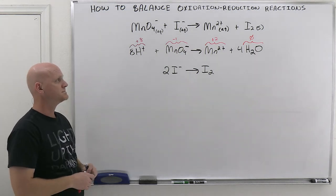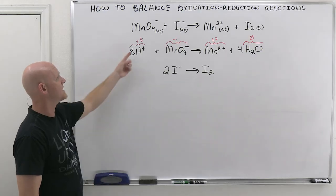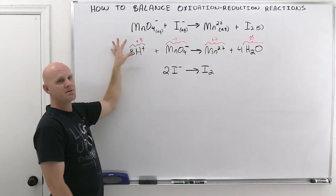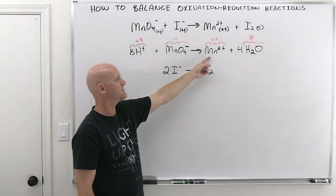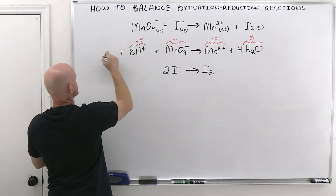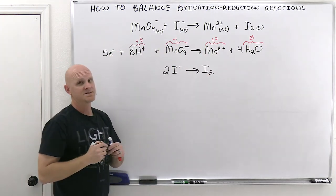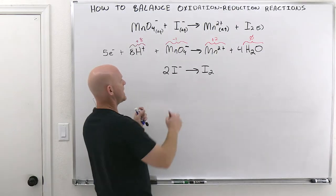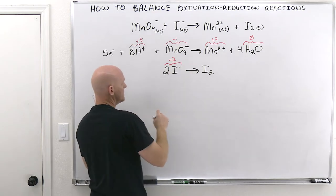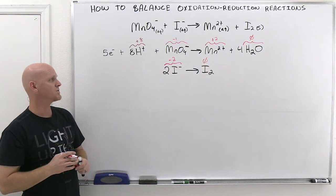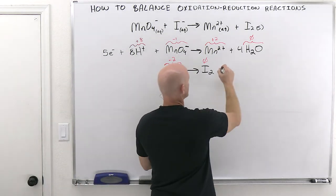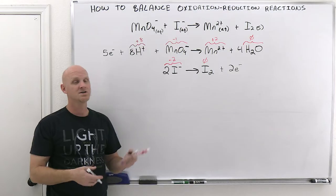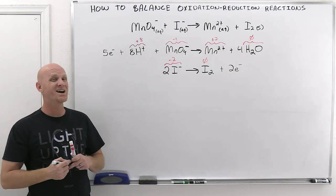Step five: balance the charge with electrons. In the MnO4− half: reactant side has 8H+ (+8) and one MnO4− (−1), totaling +7. Product side has one Mn2+ (+2) and four waters (neutral), totaling +2. The reactant side is more positive at +7, so add 5 electrons to make both sides +2. In the I−/I2 half: two iodide ions give −2 on the left; I2 is neutral at zero on the right. The right side is more positive, so add 2 electrons to the right, making both sides −2.